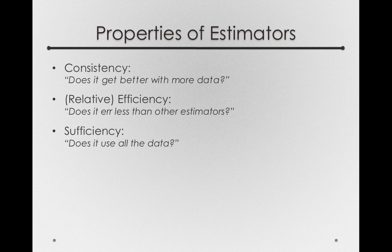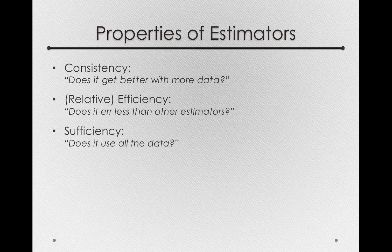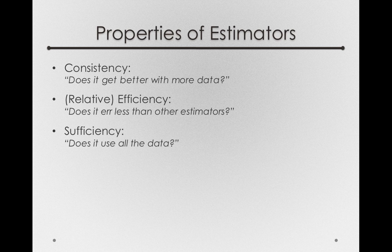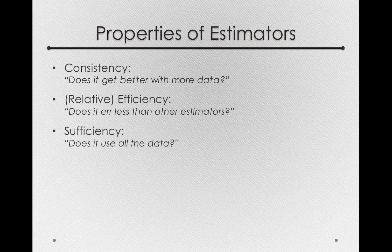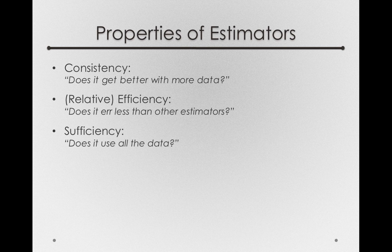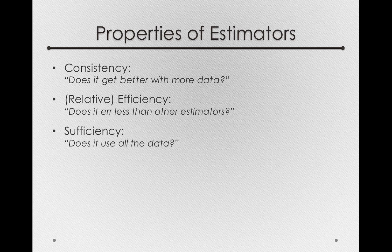Another property of estimators we care about is sufficiency. Does it use all the data? For instance, the mean is a sufficient statistic. It uses every piece of information in the sample to come up with the value, and that's why the sum of all the deviations is zero. It is really using every value to find the center of mass. The median, on the other hand, is not a sufficient statistic. The median only uses one value, the central value, and all the other values don't really get used in a calculation other than just to find the serial position of the middle value.